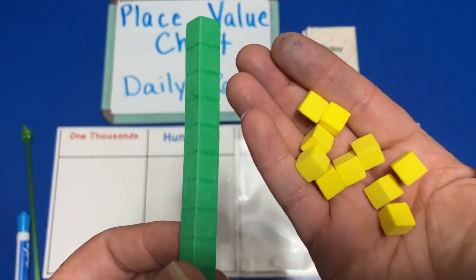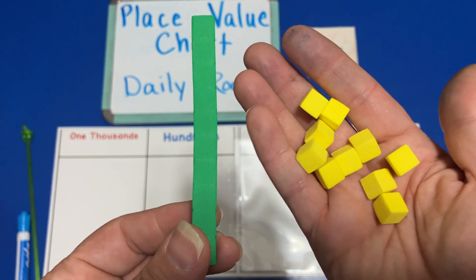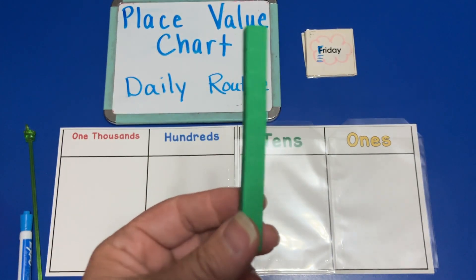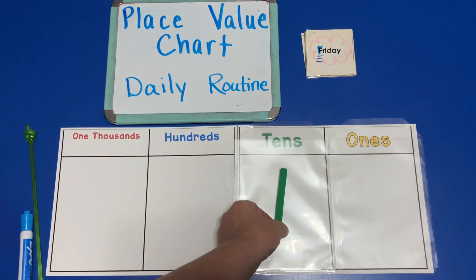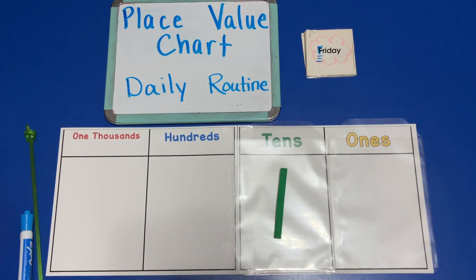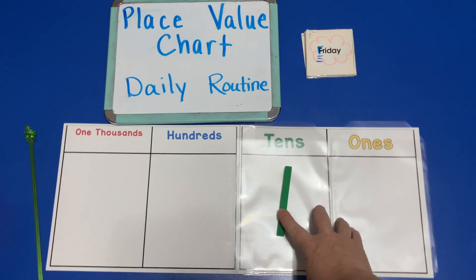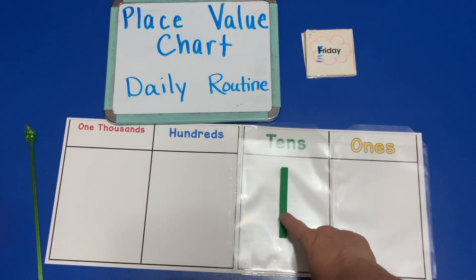And these are ten individual units, so they have the same value. So we're going to exchange — we're going to take these ten away and replace them with this one ten-long, or this one group of ten. So now on Friday we have exchanged our ten ones for one group of tens and put that one ten-long in the tens place. Those ten ones are gone because we exchanged them — that's how we got this ten. So there's zero in the ones place.